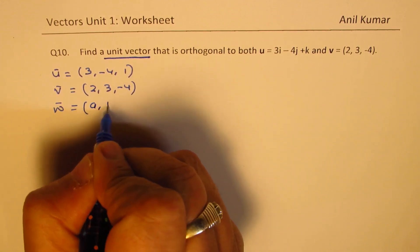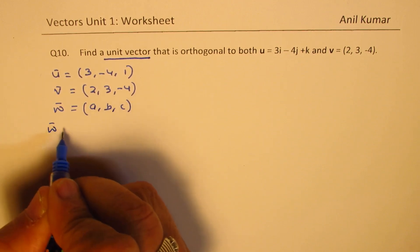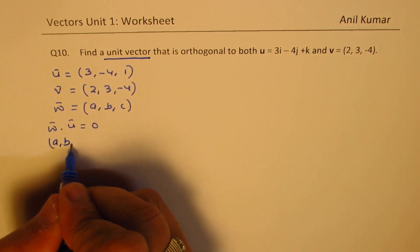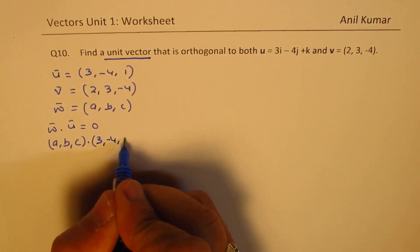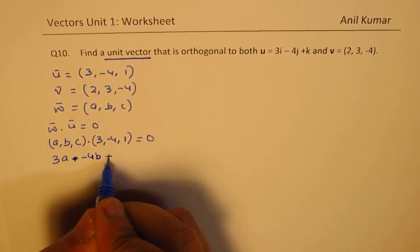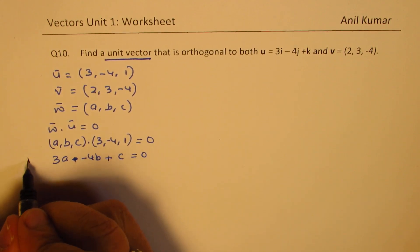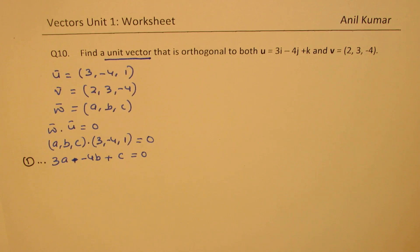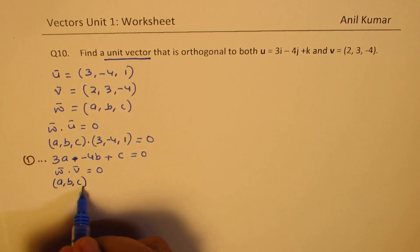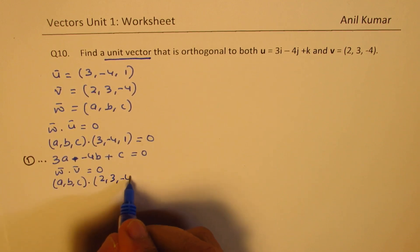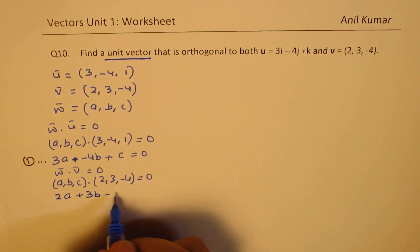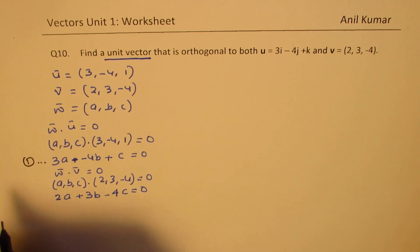We say w=(a,b,c). If w is perpendicular to u, their dot product is 0: (a,b,c) dot (3,-4,1) = 0, giving equation 1: 3a - 4b + c = 0. The second equation comes from the dot product of v with w: (a,b,c) dot (2,3,-4) = 0, giving equation 2: 2a + 3b - 4c = 0. We now have two equations with three variables.